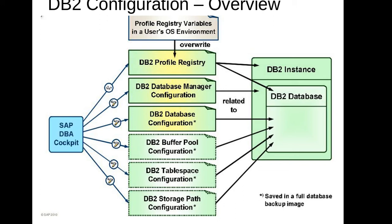One is called the database manager configuration and the other is the DB2 database configuration. Today we are going to talk about both of these. On the slide you can also see something called the DB2 profile registry, which is basically setting up the environment of the DB2 instance and database — any parameter update at that level can impact your instance and database. I'll cover the DB2 profile registry in a later session. Today we'll focus on the database manager configuration and the database configuration: how to view the configuration and how to update it.